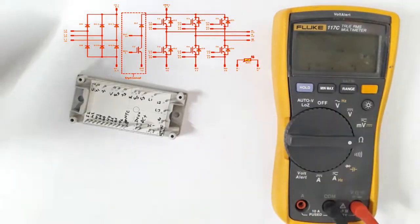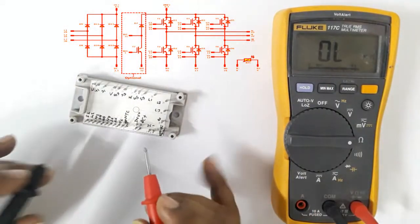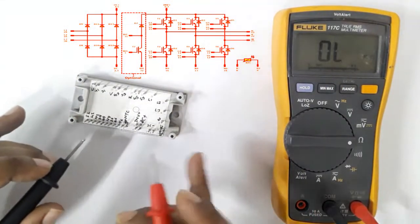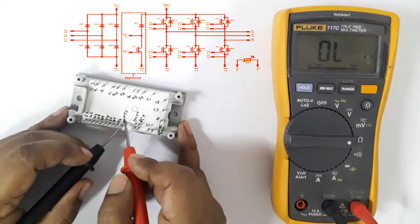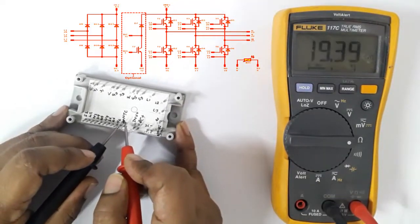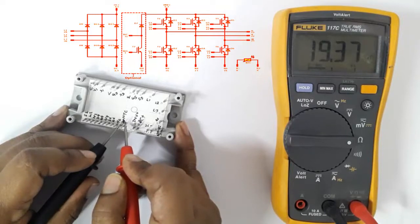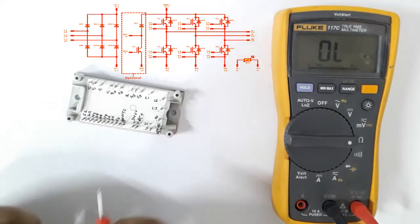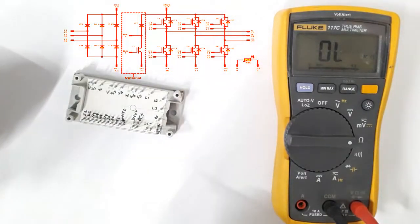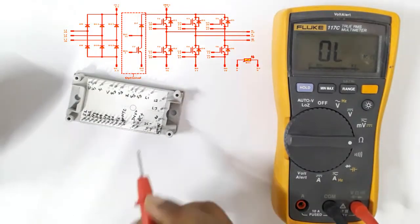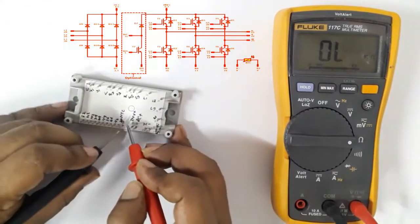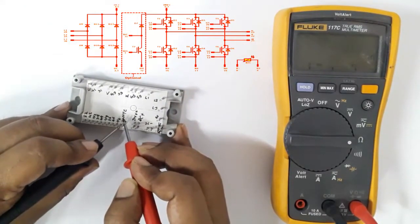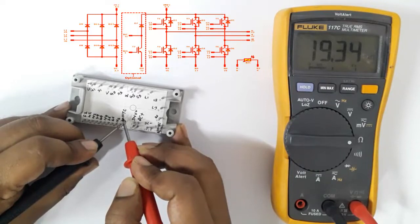Now we want to test NTC terminals 9 and 8. For NTC testing, about 19.37 kilo ohms. This one is used for NTC, negative temperature coefficient purpose. It's used in IGBT. So terminals 9 and 8 for NTC, about 19.35 kilo ohms.